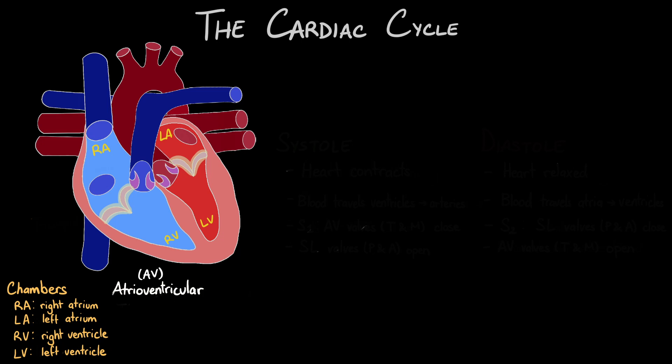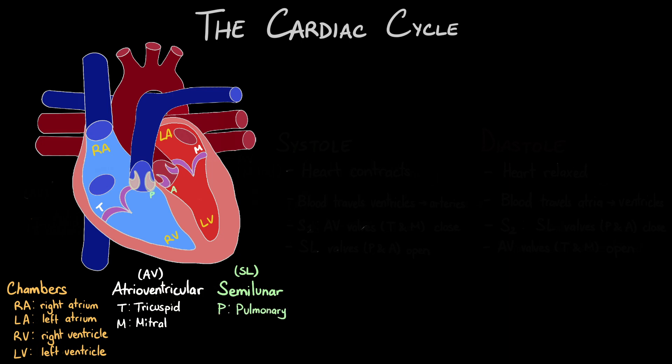These valves that separate the atria from the ventricles are the atrioventricular valves. The one on the right is the tricuspid valve, and the one on the left is the mitral valve. These valves at the entrance of the arteries are the semilunar valves — this one is the pulmonary valve, and this one is the aortic valve. The valves in the heart prevent the backflow of blood and ensure that blood flow remains unidirectional.